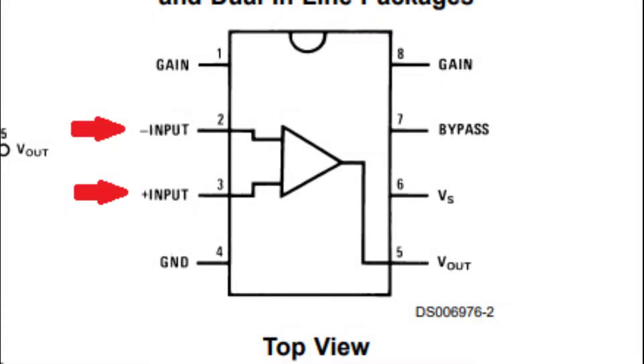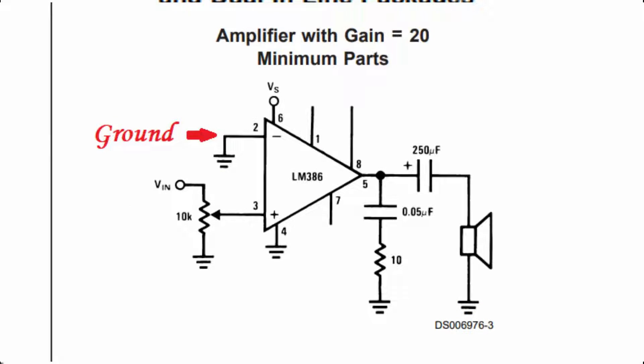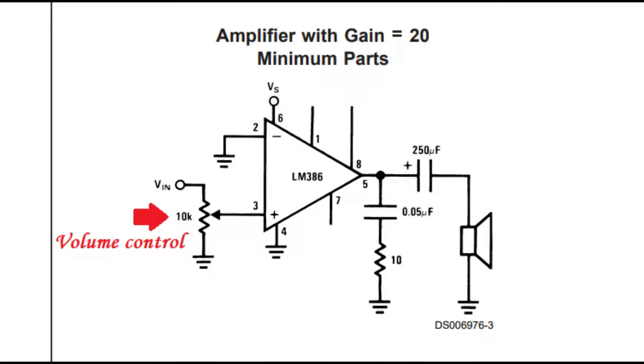So we will begin with pins number 2 and 3. These are the input pins. There's not much going on with pin number 2, it's just going straight to ground. Pin number 3 is the positive input. You will notice that the input signal goes through a volume control before it goes to pin number 3.